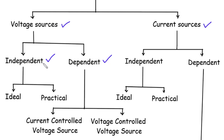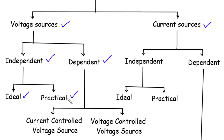Independent voltage sources are not influenced by any other element in the circuit. They are self-contained and provide a constant voltage regardless of the current flowing through them. Within the realm of independent voltage sources, we can distinguish between ideal and practical sources. Ideal voltage sources, often represented as ideal batteries, are theoretical constructs used for analysis and circuit design. They are characterized by their ability to provide a specific voltage without any internal resistance or limitations. On the other hand, practical voltage sources, such as real batteries or power supplies, have some internal resistance and limitations, and in the real world no source is perfectly ideal.